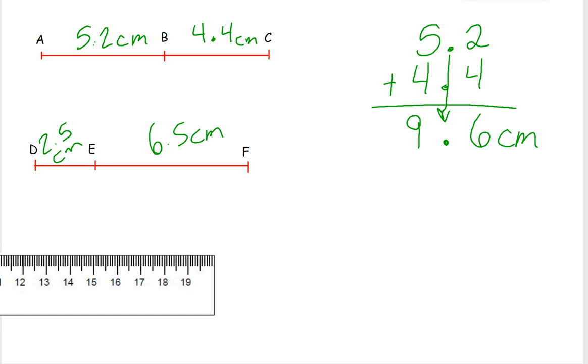So we have 2.5, or 2 and 5 tenths, plus 6 and 5 tenths. So decimal comes straight down. 5 plus 5 is 10. Carry the 1. 1 plus 2 is 3. Plus 6 is 9. So the whole line is 9.0, or 9 centimeters.